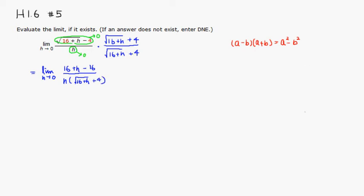But we can simplify this. You can see that there's a positive 16 here and a minus 16, so you can cancel that out. Then you have an h on top by itself and there's an h on the bottom, so you can cancel h's. So you're going to end up with 1 on top.